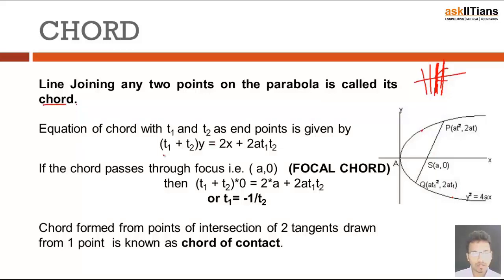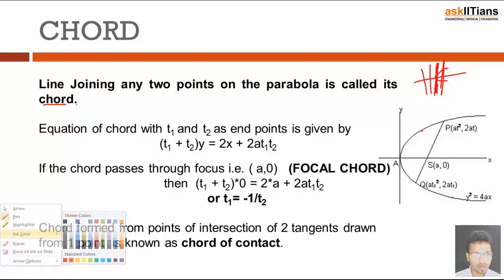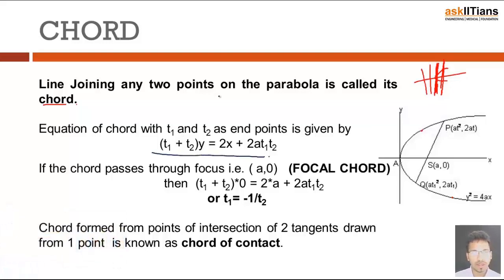Now for getting the equation of chord, again it's not that difficult. Basic knowledge of straight line is required. So what we need to do, we know two points as (at₁², 2at₁) and (at₂², 2at₂). So slope will be 2a(t₁ - t₂) upon a(t₁² - t₂²).